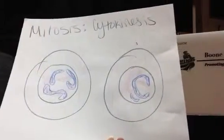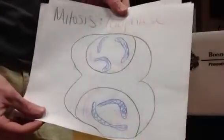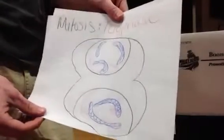So in cell reproduction, there is meiosis and mitosis. Mitosis occurs in body cells, but meiosis occurs in sex cells.